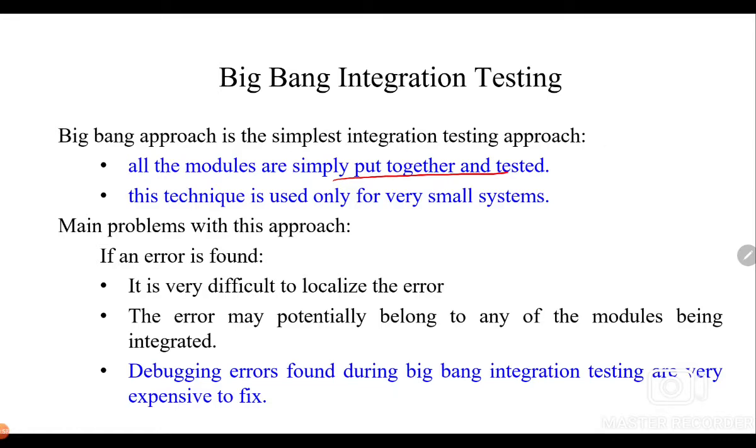A program or project or product might have anything which ranges from module number one to module number N. When all of these modules are integrated together and they form the main project and are tested, it is known as big bang integration testing. This technique is used for very small systems where there are not many modules or sub-parts of the same program.